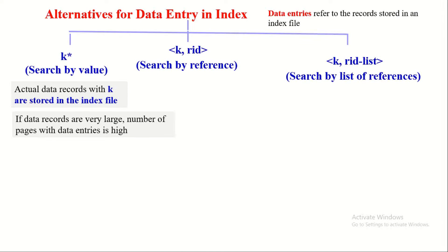There are three alternatives for what to keep as data entries in an index. The first alternative is that the actual record itself is kept as the data entry — denoted as k*, meaning the actual record with search key value k is included in the index. The second alternative is the search key followed by a record ID, which is a pointer to the location where the actual record is stored. The third alternative contains the search key followed by a list of record IDs of records having the same search key value.